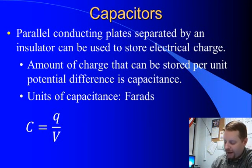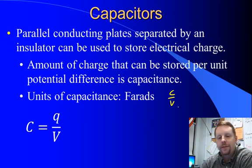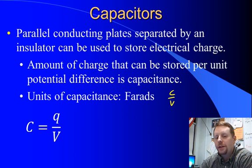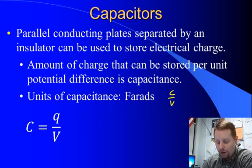When you think about it, a farad is just going to be a coulomb per volt. And a farad is a pretty large amount of capacitance. Usually we're talking about things like microfarads, nanofarads, even picofarads. So a farad is a very big unit of capacitance. Typically we're using things considerably smaller.